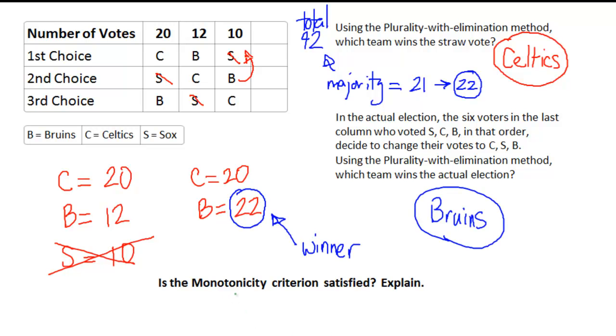Okay, the final question we're really going to ask ourselves now is, is the monotonicity criterion satisfied? And remember that the monotonicity criterion says that when a candidate, in this case it's the Celtics, wins the first election,